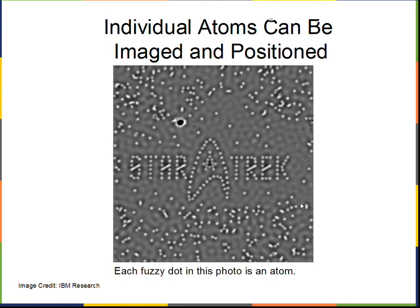Our current technology is such that we are able to crudely image atoms. Each fuzzy spot on this slide is an atom. We also have the ability to move those atoms around on a surface. Here, I think this is from IBM, they've spelled out the word Star Trek. We've got a little logo here and they've done some other shapes as well.